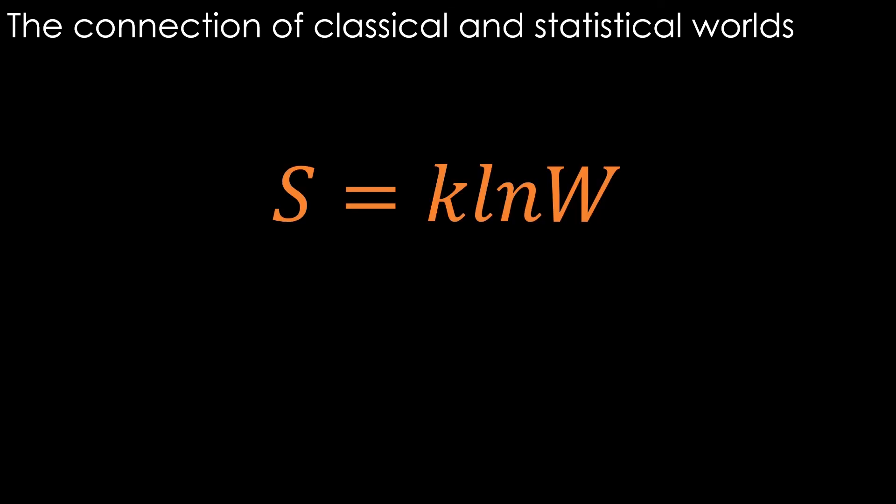The formula K natural log of W gives the physical meaning for entropy as a measure of microstates corresponding to the most probable macrostate. Entropy ultimately is a measure of pure chance.